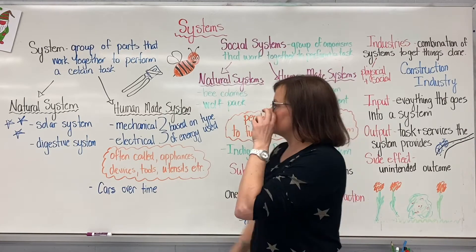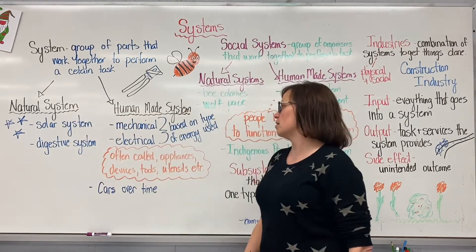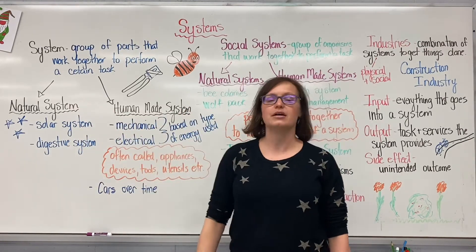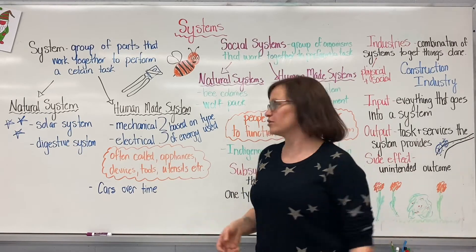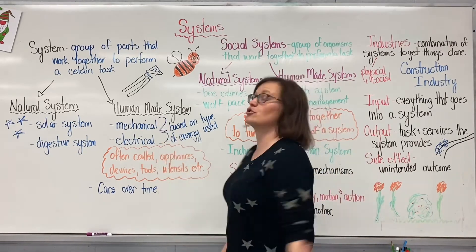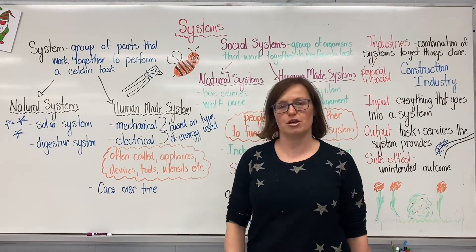There are two types of systems: a natural system and a human-made system. A natural system occurs naturally, like the solar system or the digestive system in your body.